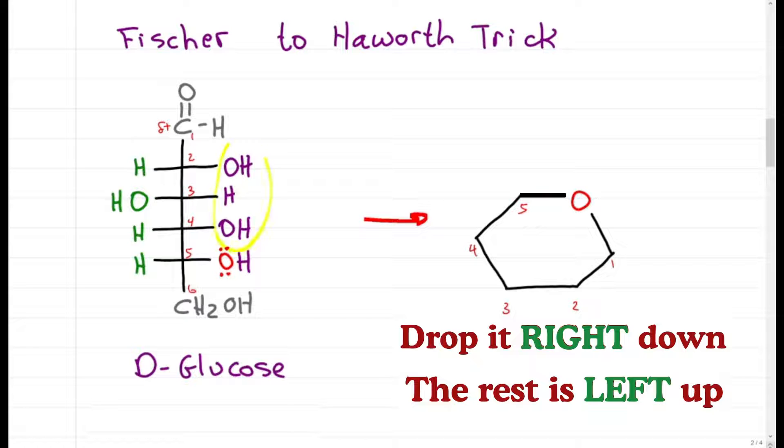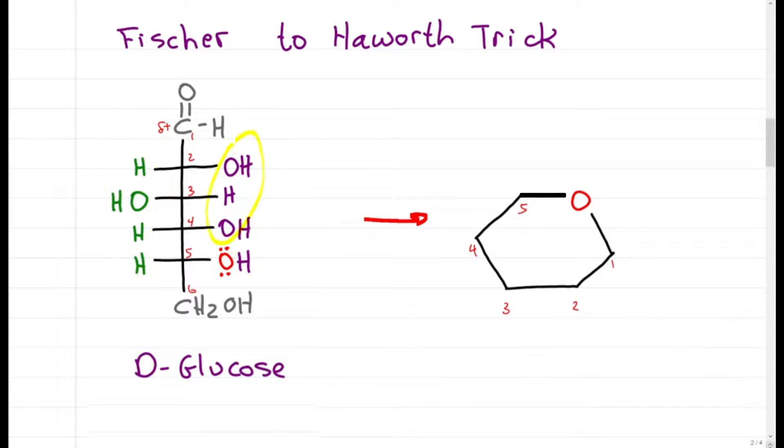If we drop it right down, everything on the right is drawn down, the rest being left up means everything on the left goes up. So let's drop these right down on 2, 3, and 4, and these will be left up on 2, 3, and 4.